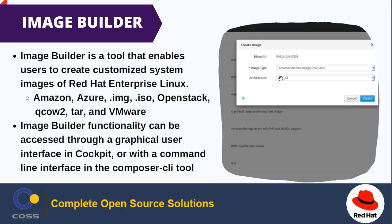You can use the Image Builder to create customized system images of Red Hat Enterprise Linux. It is a tool that enables users to create customized system images for Amazon, Azure, .img format, .iso format, OpenStack, QCOW2, TAR, and VMware image types. Prepared for cloud platform deployment, Image Builder automatically handles the setup details for each output type, making it easier and faster to use than the manual method of image creation. You can also access Image Builder functionality through the command line interface using the Composer-CLI tool.